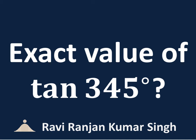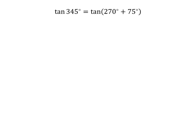In this video, we will learn to find the exact value of tangent of 345 degrees. 345 degrees is equal to 270 degrees plus 75 degrees. So tangent of 345 degrees is equal to tangent of 270 degrees plus 75 degrees.